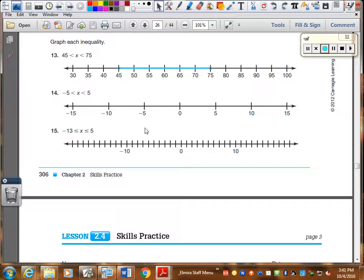Next, it says to graph each inequality. So, negative five gets a circle, but no equal bar. I don't color it in. Positive five gets a circle. No equal bar. I don't color it in. It's a compact inequality. We will connect those. Compact inequalities are more common.